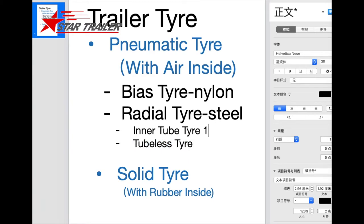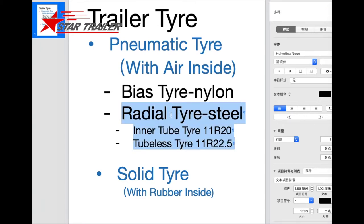For all those radial tires, we have inner tube tire and tubeless tire. Inner tube tires are usually named in one way and tubeless tires are named in another way. They use different rims. To talk about the tire, we must know the rims, but we are not going to talk about rims today — we are going to talk about semi-trailer tire only. So let's have a look at the radial tire, which has two types: inner tube tire and tubeless tire.